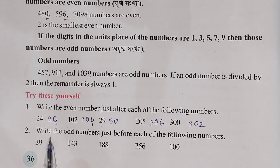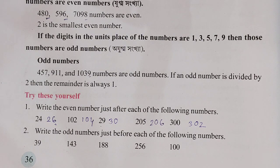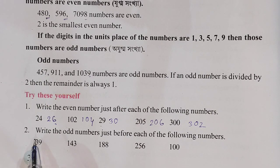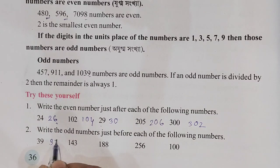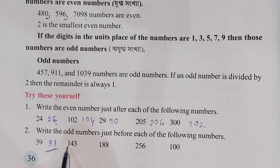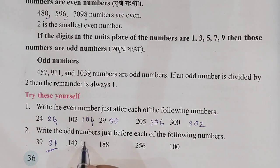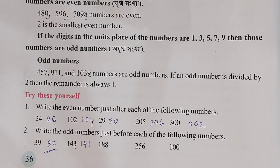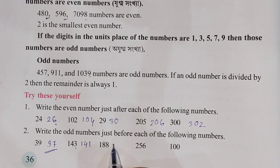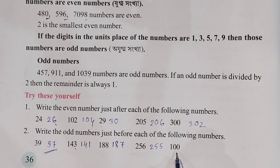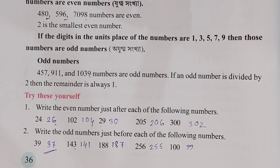Write the odd number just before each of the following numbers. For 39, the number before is 38, and the odd number is 37. For 143, the odd number before is 141. For 188, the odd number before is 187. For 256, the odd number before is 255, and for 100, the odd number before is 99.